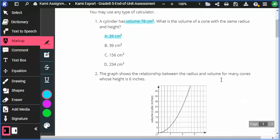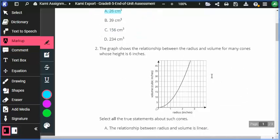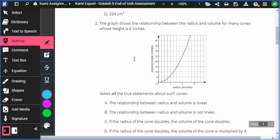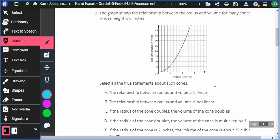All right. Number two. The graph here shows the relationship between the radius and volume for many cones whose height is six inches. Which of the following are true statements based on this? Number one. Is the relationship between the radius and volume a linear relationship? If this was a linear relationship, that means if I graph it, it's going to be a what? A linear relationship is going to make a line. Is this a line?